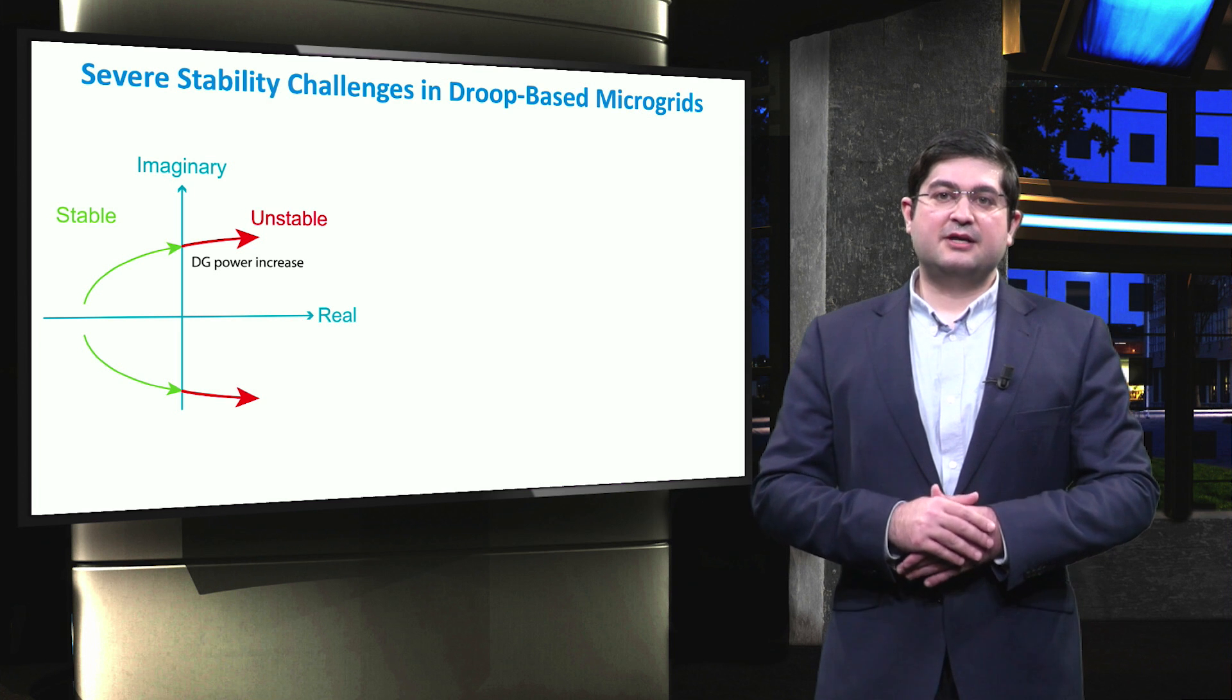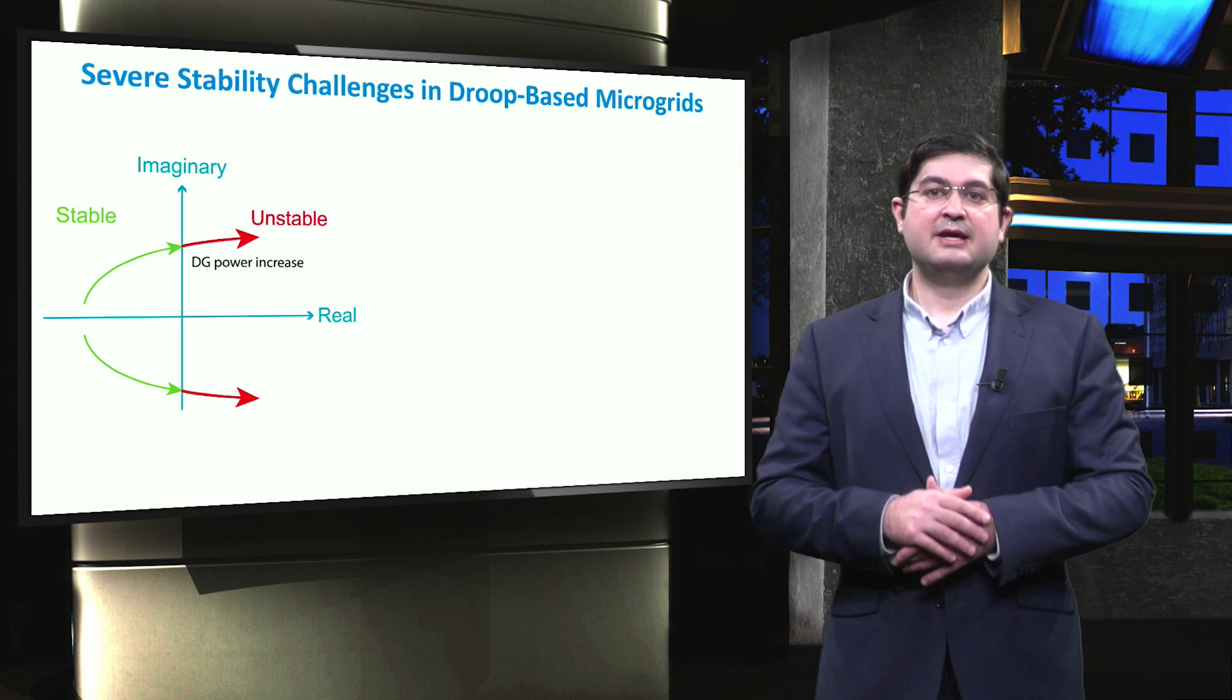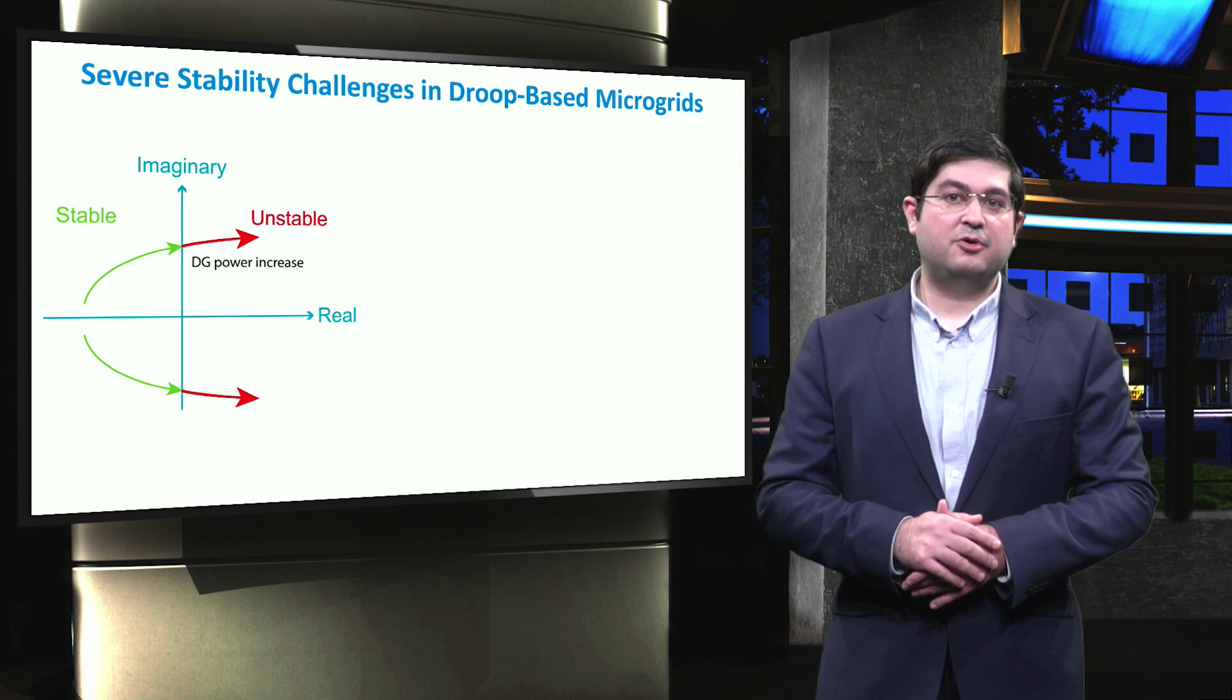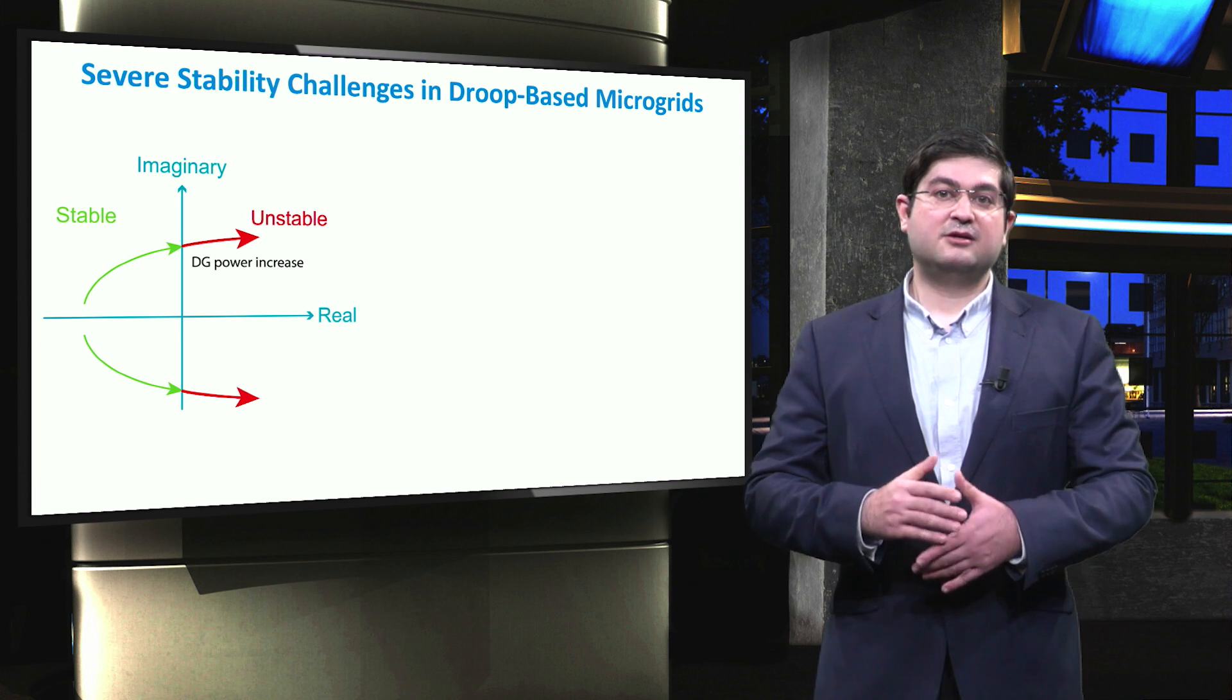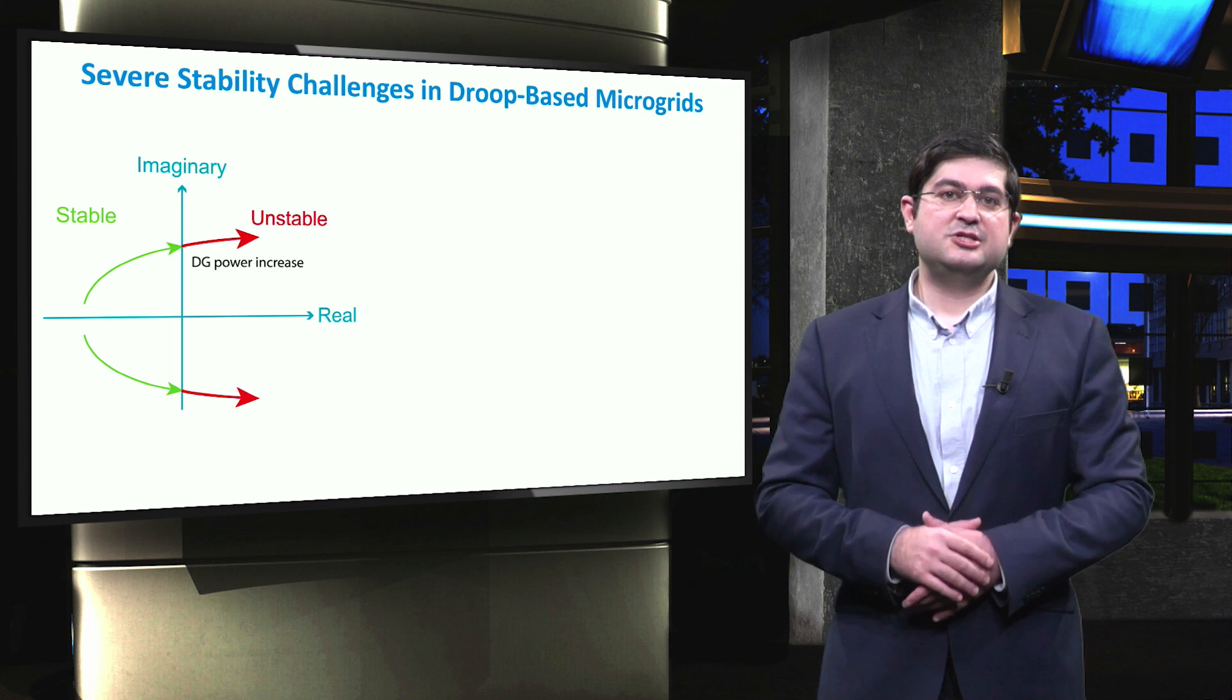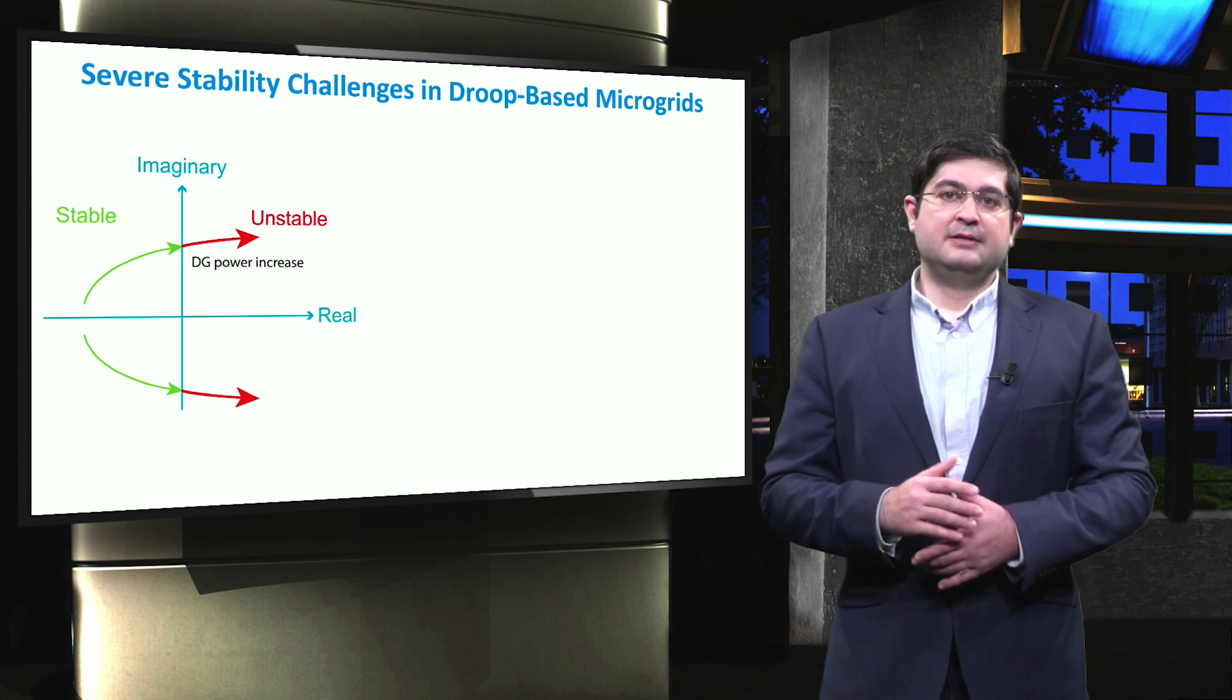As it is shown, significant variations in both real and imaginary components will occur according to the changes in the operating conditions of DG units like DG power increase.